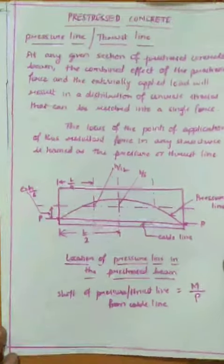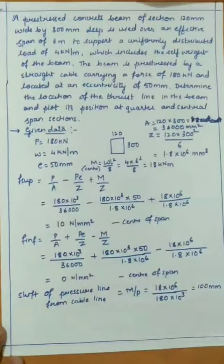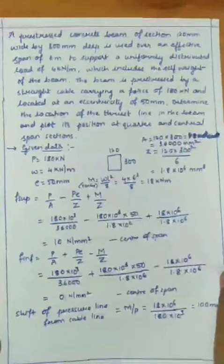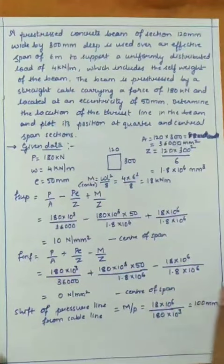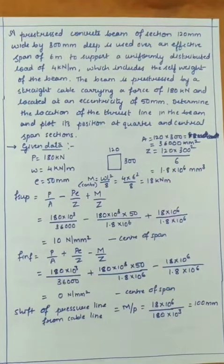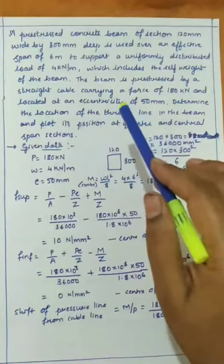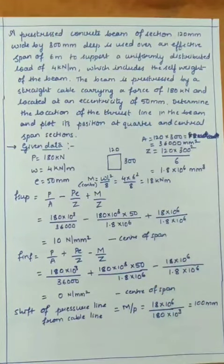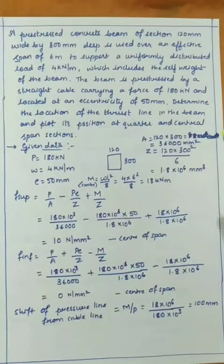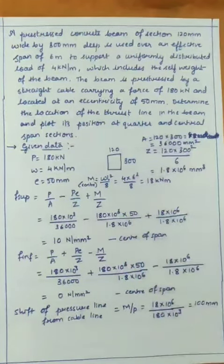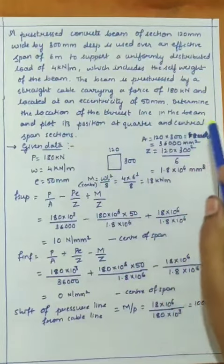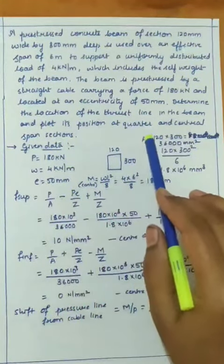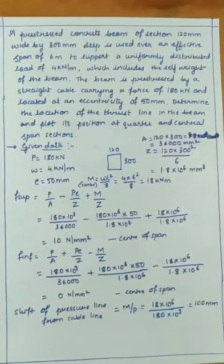Let us see a simple numerical example on pressure line or thrust line. A prestressed concrete beam of section 120 mm wide by 300 mm deep is used over an effective span of 6 meters to support a uniformly distributed load of 4 kN per meter, which includes the self-weight of the beam. The beam is prestressed by a straight cable carrying a force of 180 kN and located at an eccentricity of 50 mm. Determine the location of the thrust line and plot its position at quarter and central span sections.